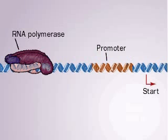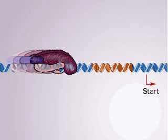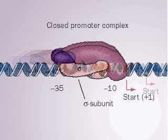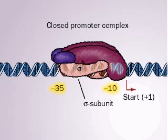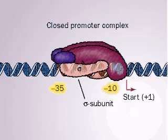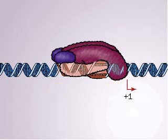RNA polymerase weakly binds DNA. It moves along the DNA until it reaches a promoter, where its sigma subunit recognizes and binds the minus 10 and minus 35 sequences, forming a closed promoter complex.